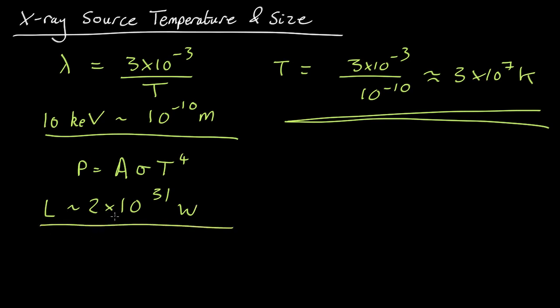So given that luminosity, we know that that must equal, if it's a black body, A sigma T to the 4th. So we know that L equals the area. If it's a sphere, that's 4 pi R squared. Sigma, the Stefan-Boltzmann constant, which is 5.67 by 10 to the minus 8 times T to the 4th. And we know the temperature up here.